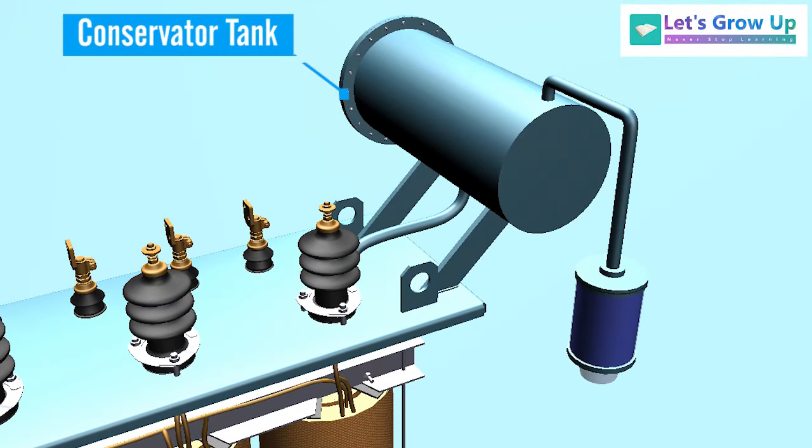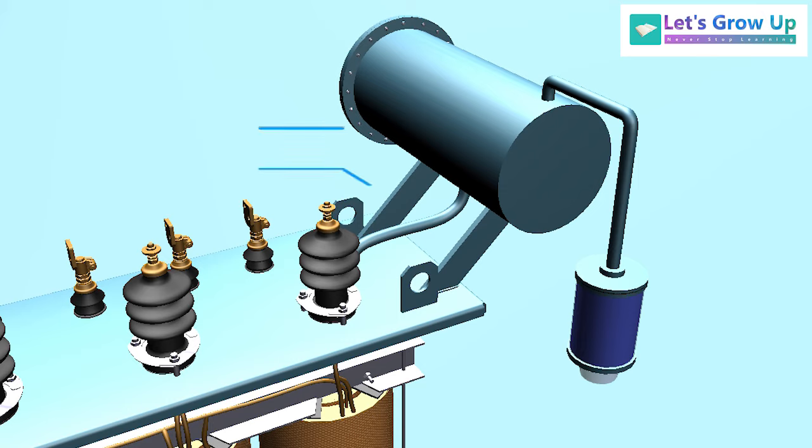Conservator tank: It is a small tank which is used in high power transformers. It is connected above the main tank of the transformer. It has a cylindrical shape. Main tank and conservator tank are connected to each other through a pipe.